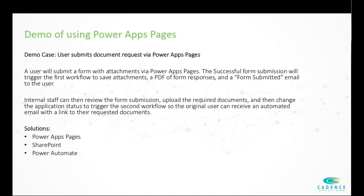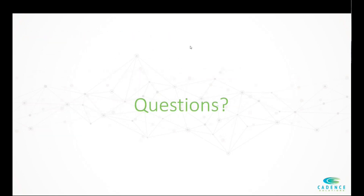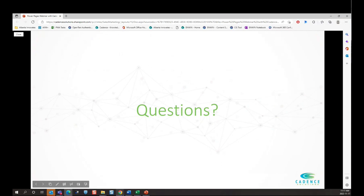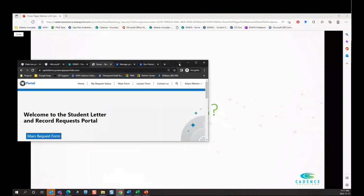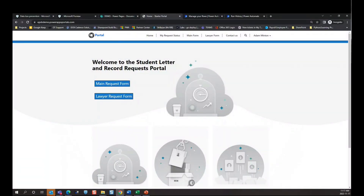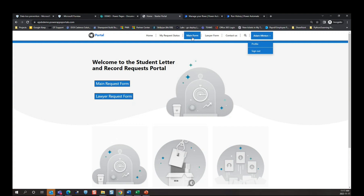Now we're ready to get into the demo. For the demo case, a user is going to submit a document request through Power Pages. They're going to submit a form, upload some attachments, and after they've submitted the form, internal staff can then review that form submission in SharePoint, upload the required documents, and change the application status to trigger that workflow with the secure link and automated email. Here we are on the portal — this is just our landing page. We haven't done any special design; what we want to highlight today is the functionality of the form. We've already authenticated in with our demo account, and now we're going to go on to the main form.